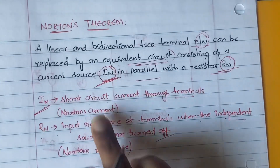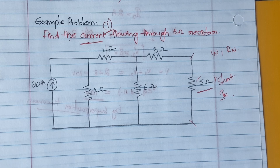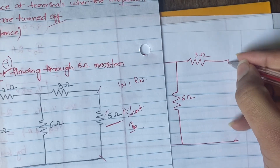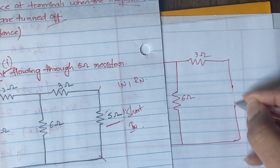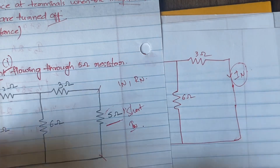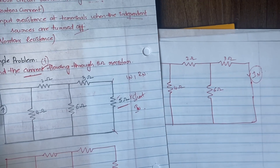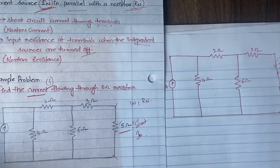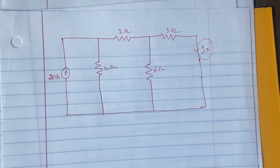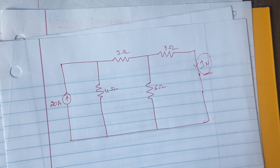To find IN, we need the short-circuit current, so we short-circuit the terminals. This is our original diagram, but at this end we are short-circuiting it. Whatever current flows through that short circuit we assume as IN, and our task is to find that value. Everything else in the circuit remains the same — we are just short-circuiting this end.